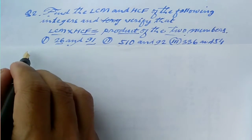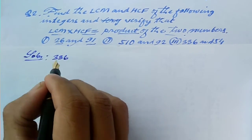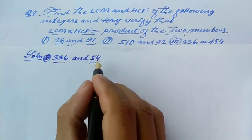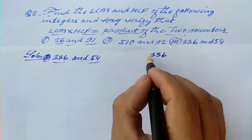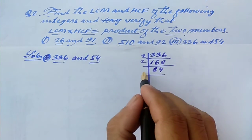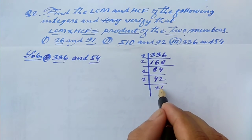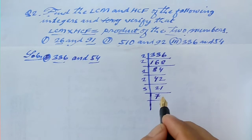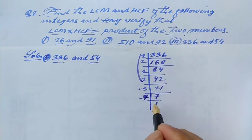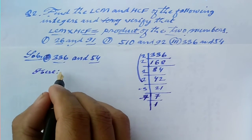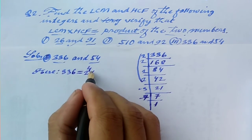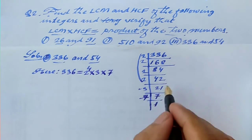Finally, let us come to Roman numeral 3: 336 and 54. Prime factorization of 336: divisible by 2 giving 168, then 84, then 42, then 21, which is 3 into 7. So 336 equals 2 to the power 4 into 3 into 7. Now for 54: 2 into 27, and 27 equals 3 cubed. So 54 equals 2 into 3 cubed.